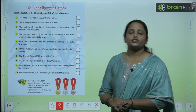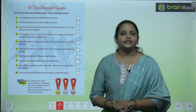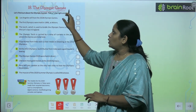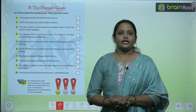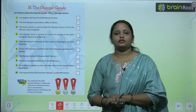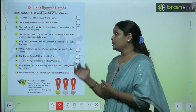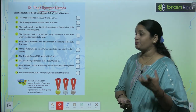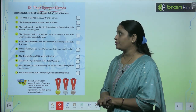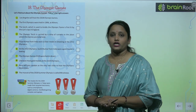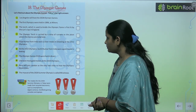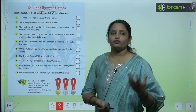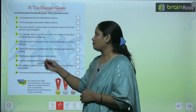Children, let's move on to chapter number 18 and the name of the chapter is the Olympic Games. In the previous chapter, we have learned about different types of balls. Here we are going to learn about different types of Olympic Games that are played in the Olympics.